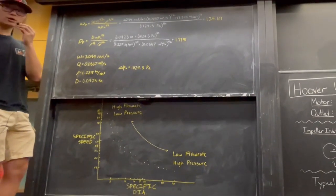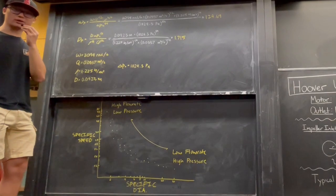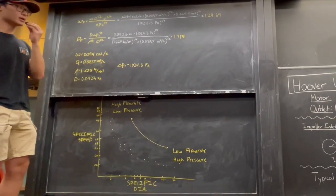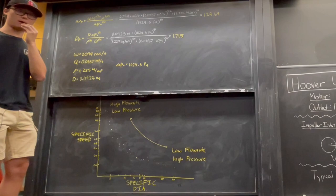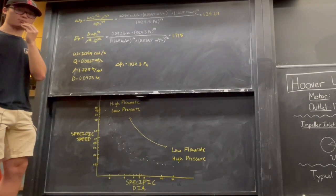To compare our pump with other pumps, we calculate the specific speed and diameter. This way we can classify our pump and see whether it's an axial flow pump or a radial pressure pump.